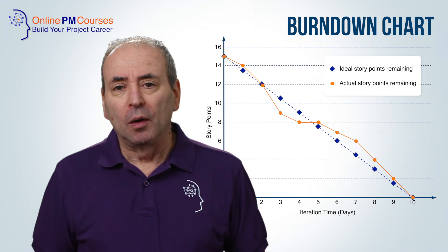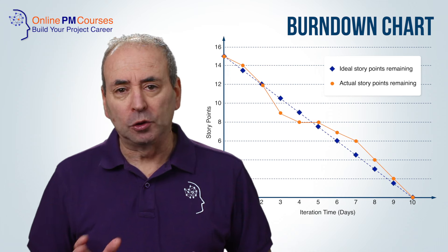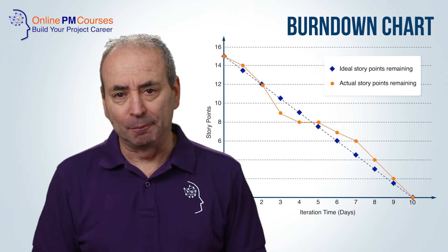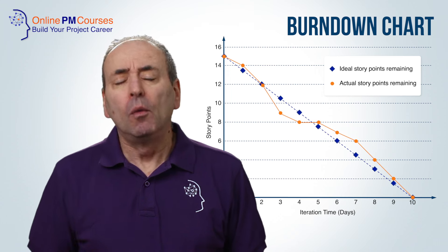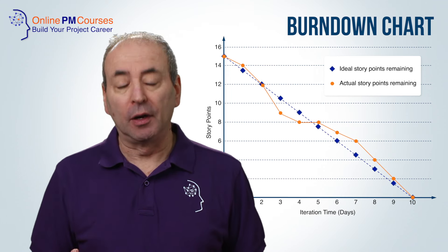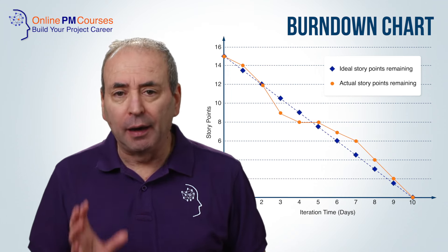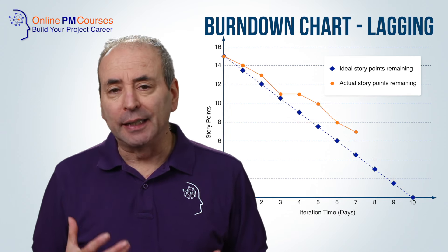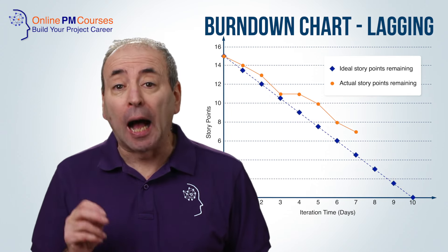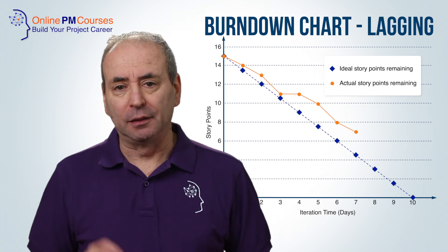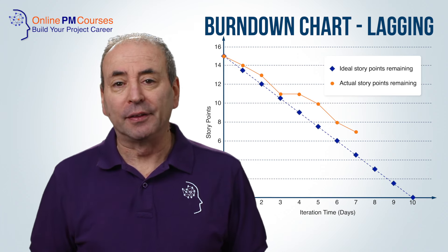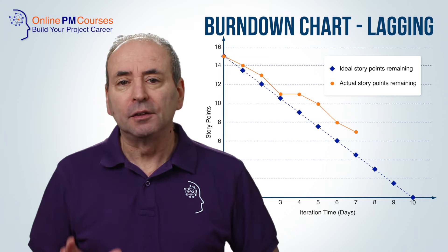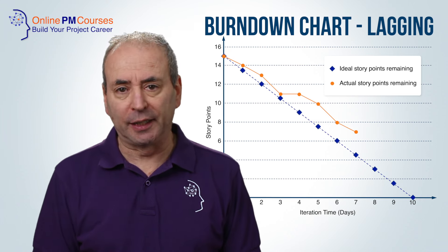Of course, we may not complete a whole story point or finish a story point within a single day. If, when we plot our actual burndown against our ideal or planned burndown rate, we find that the actual burndown curve is above the ideal line, then we know that the project is lagging, and the team has to work hard to find a way to get back on schedule.